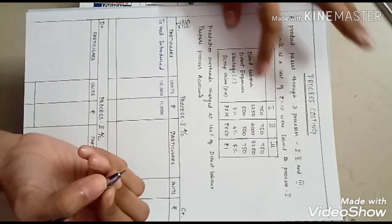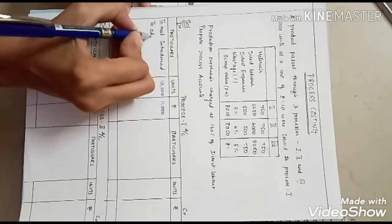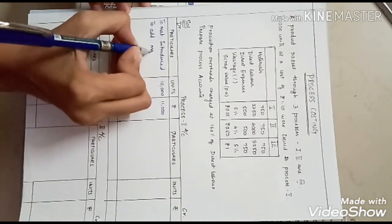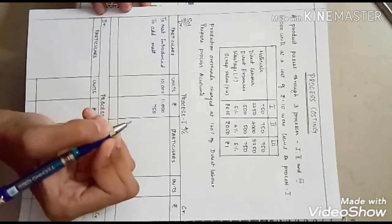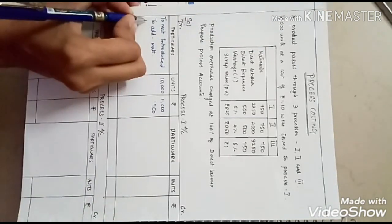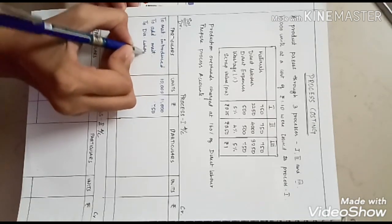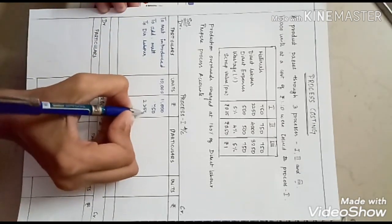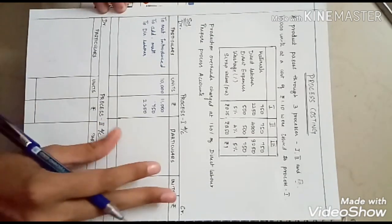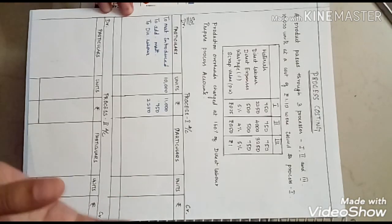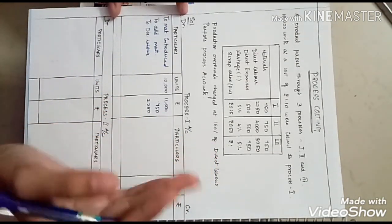Next, additional materials introduced were 750. Then we have direct labor of 2,250. In the process account, we are going to debit all the expenses incurred for that process — expenses incurred for a particular process are debited on the debit side of the process account.